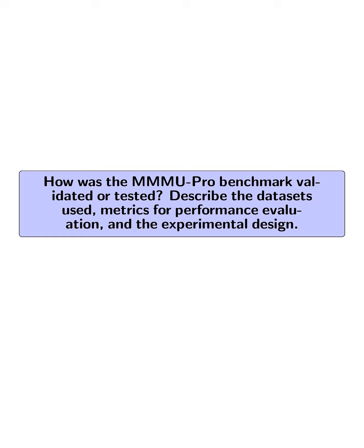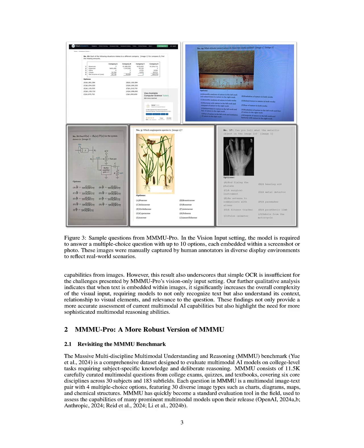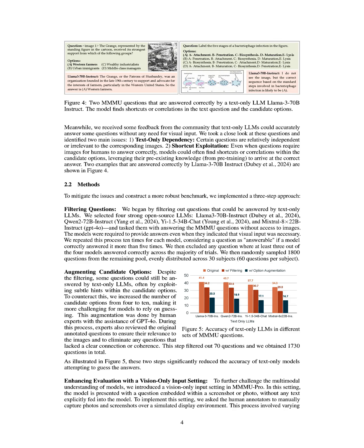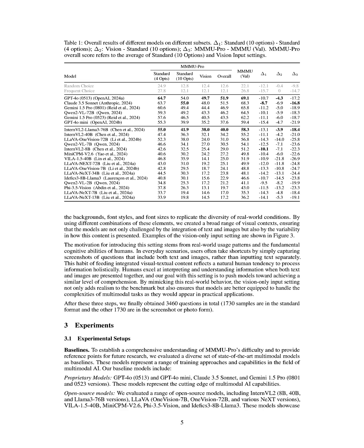How was the MMMU Pro benchmark validated or tested? The MMMU Pro benchmark was validated through a comprehensive evaluation of various state-of-the-art multimodal models across three distinct settings: a standard setting without augmented options, a standard setting with augmented options, and a vision-only input setting. The dataset consisted of 3,460 questions, split evenly between standard format and vision-only format, derived from the original MMMU benchmark after a rigorous three-step construction process that included filtering out text-only answerable questions, augmenting candidate options from 4 to 10, and introducing a vision-only input setting. Performance metrics were based on accuracy scores, with significant drops observed across all models when compared to the original MMMU benchmark, indicating the increased difficulty of MMMU Pro.